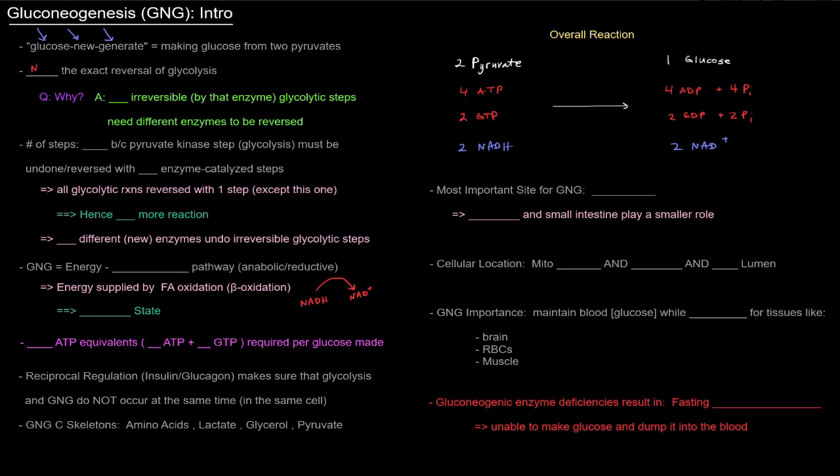Why is that? Well, because there are three irreversible glycolytic steps. In glycolysis, there are three irreversible steps that need different enzymes to be reversed. Now, when I say they're irreversible by that enzyme, that doesn't mean those processes are impossible to undo. It's just that they don't get undone by the same enzyme that catalyzed the forward reaction.